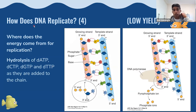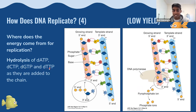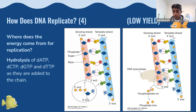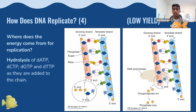Where does the energy for DNA replication come from? It comes from the hydrolysis of dATP, dCTP, dGTP, and dTTP — the triphosphate versions of the nucleotide bases. The phosphate base joins onto the three prime end, the phosphate ion is released, and that process produces the energy used to drive replication.